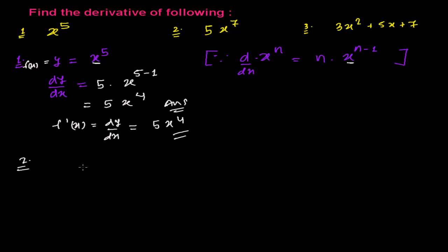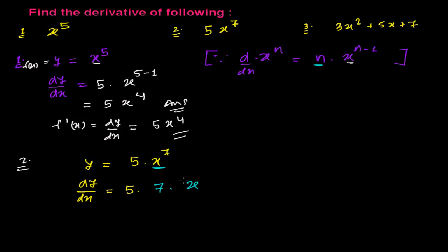For the second one, let my function y equal 5 times x to the power 7. Therefore dy/dx — the derivative with respect to x — since 5 is a constant, we keep it aside. We apply the power rule to x to the power 7: the base is x and the power is 7, so it's power times base to the power 7 minus 1.